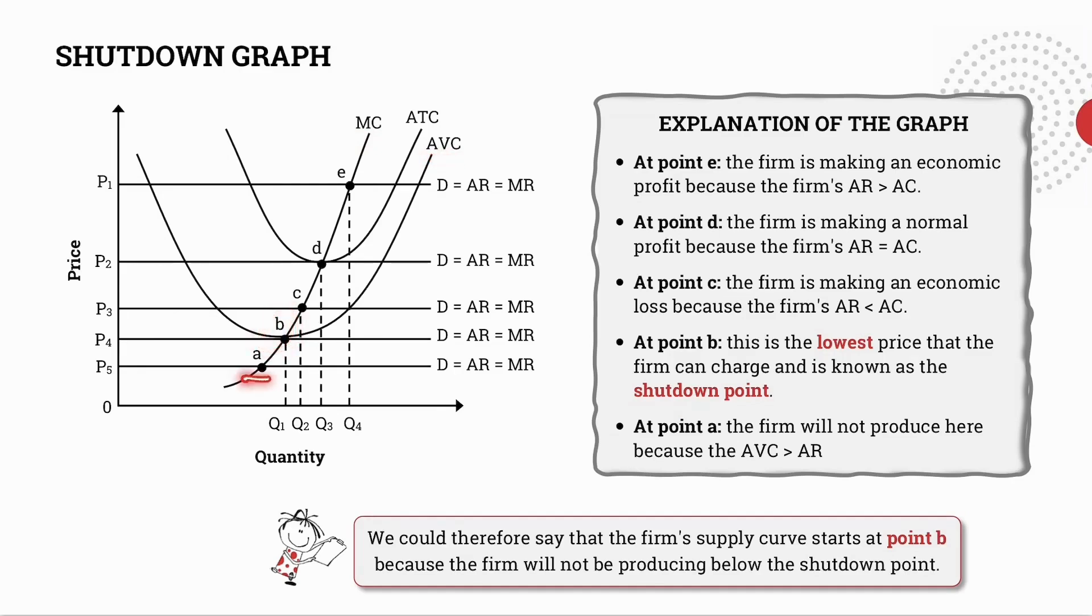At point A the firm will not produce here simply because the average variable costs exceed the average revenue. So what we could in essence also say Grade 12s is that the firm's supply curve starts at point B because this is the lowest price that the firm can charge. It is not feasible for them to be charging anything lower than price P4.